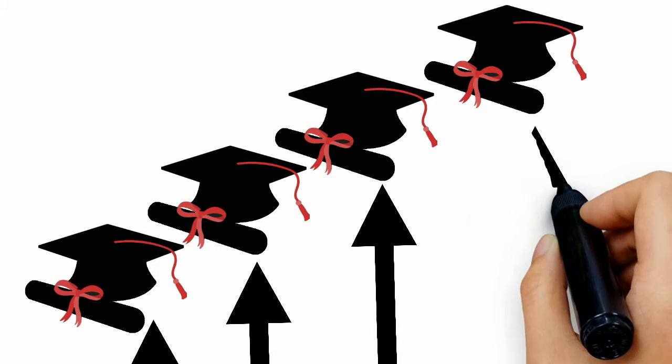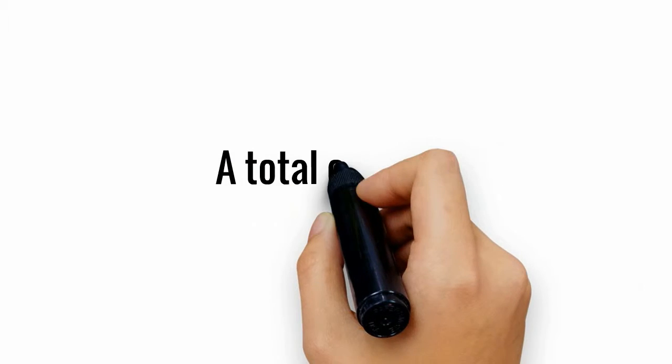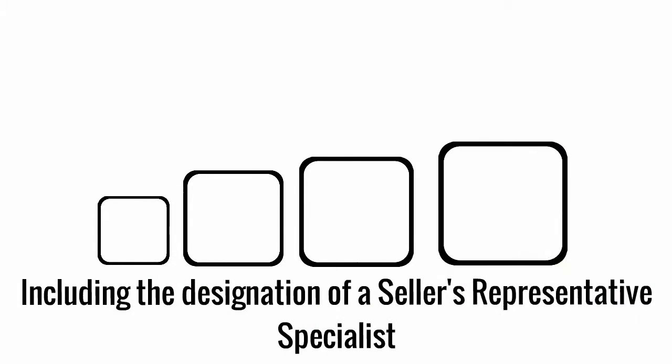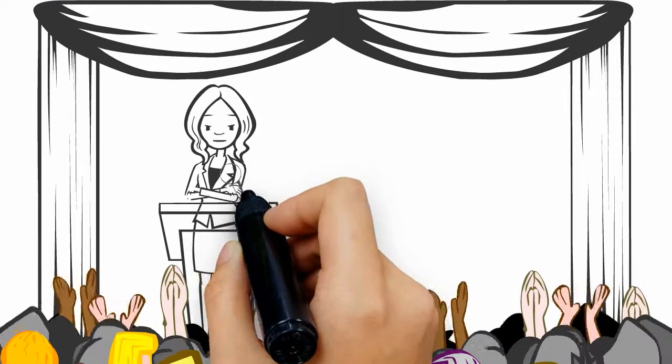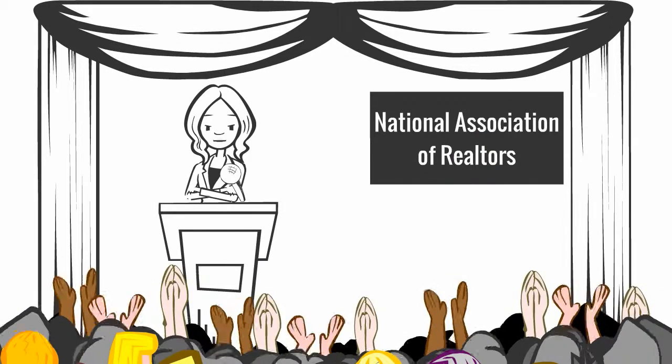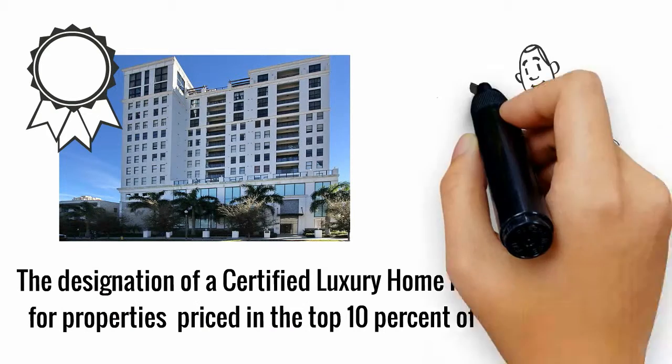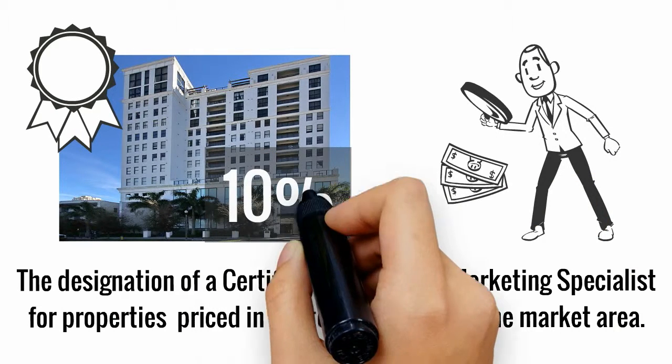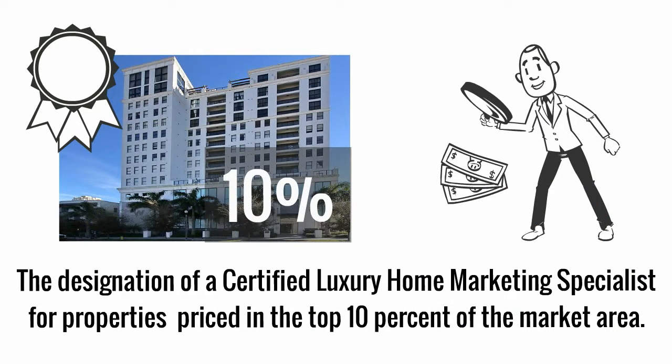Carolyn has obtained an impressive array of certifications and designations, a total of nine so far, including the designation of a seller's representative specialist. That's the only National Association of Realtors designation specific to sellers, and the designation of a certified luxury home marketing specialist for properties priced in the top 10% of the market area.